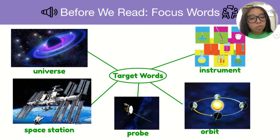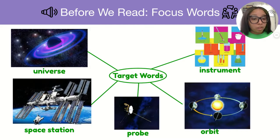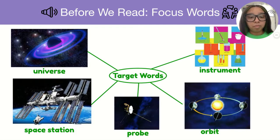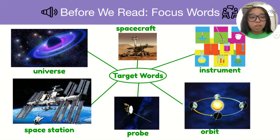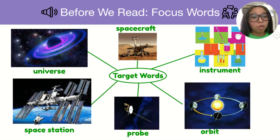Orbit is to go or revolve around one particular item or object. For example, the Earth orbits the sun, which means we go around and around the sun. We do not orbit any other planets or any other stars except for the sun. And a spacecraft — we're going to learn more about spacecrafts, which are very similar to probes. These are particular instruments that scientists use to collect data, just like probes, just like in the space station, and just like rovers.